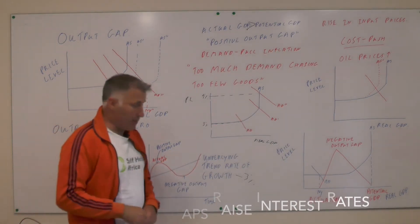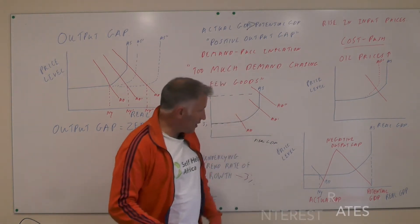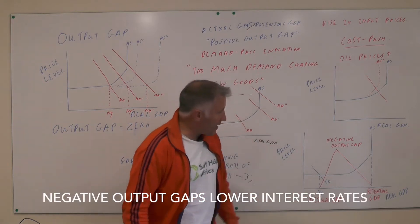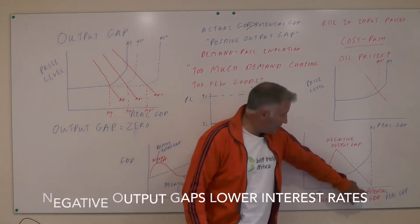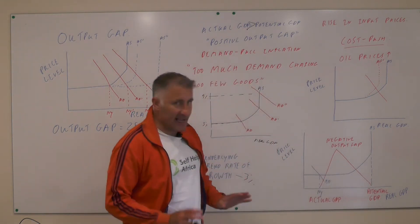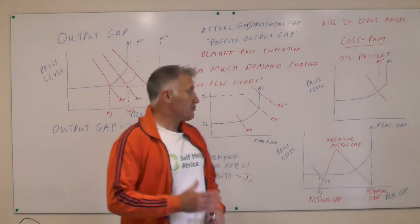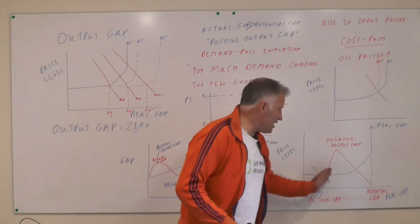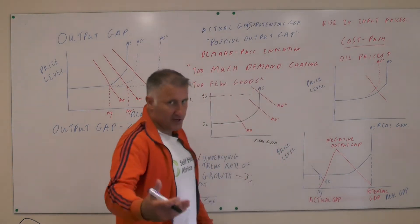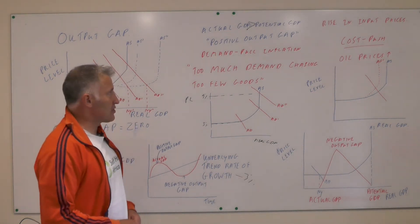If actual GDP is less than potential GDP, that's a negative output gap. In the small diagram here, actual GDP is down here, potential GDP is up here, and the gap between them is the negative output gap. You don't want one of those. If you have one, you want to increase AD at least to close that gap, because that will give you economic growth, more jobs, and more taxation revenue.